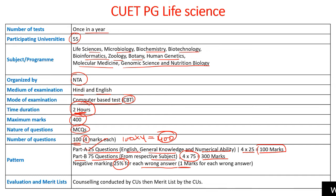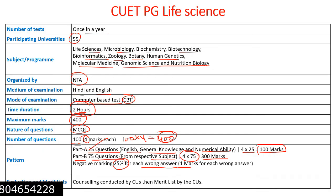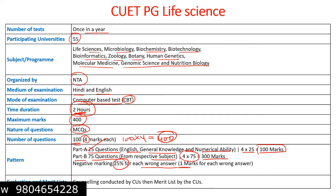Remember, there is no fellowship or stipend — this exam is simply to get into one of the 55 participating central universities for continuing your master's in subjects like microbiology, biochemistry, biotechnology, bioinformatics, zoology, botany, and human genetics. You need to appear in the CUET PG Life Science examination.